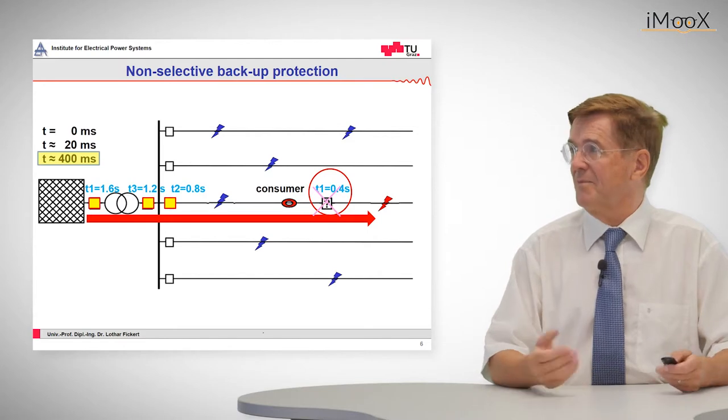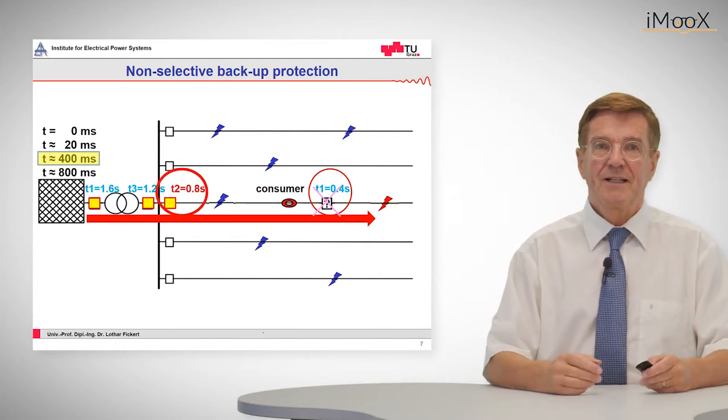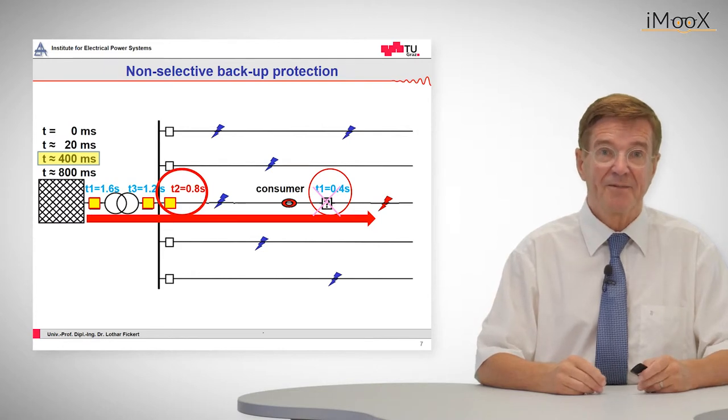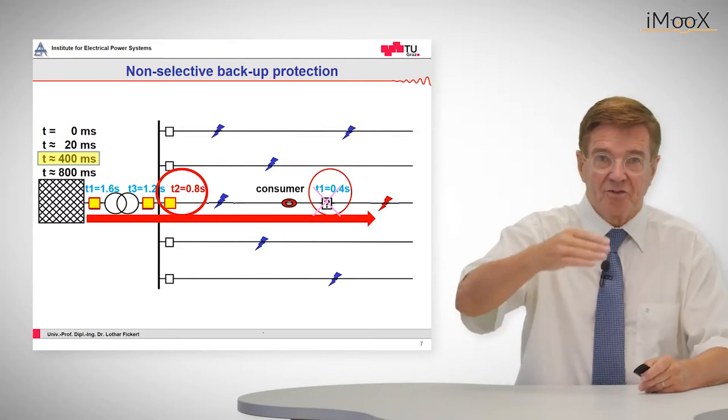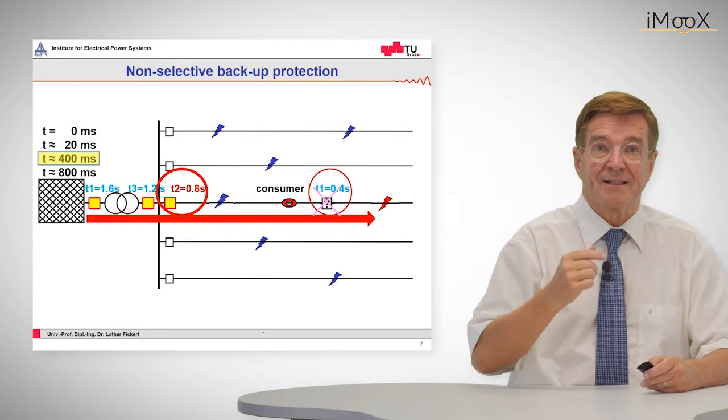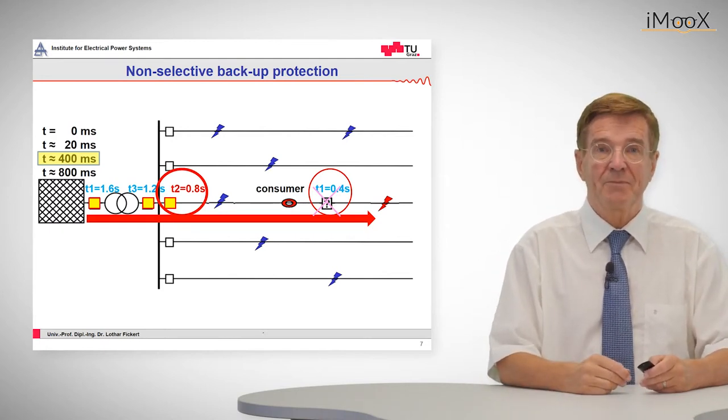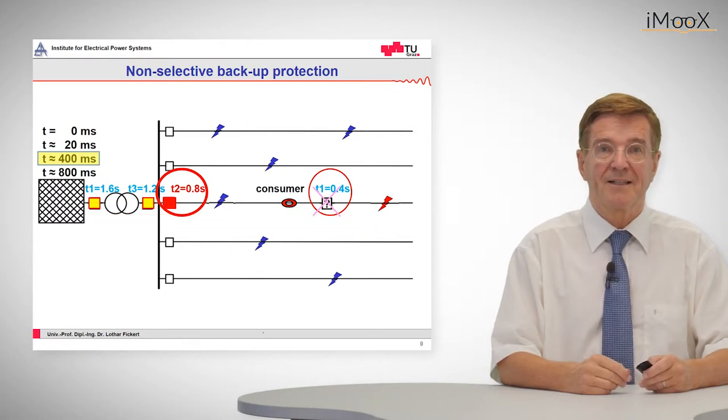So what happens? Somehow it does not work and it will not trip after 0.4 seconds as indicated. Then the time goes on and a short time later at 0.8 seconds, the next upstream relay will pick up and clear that fault.